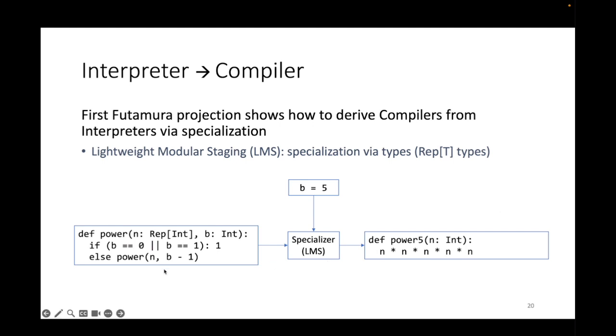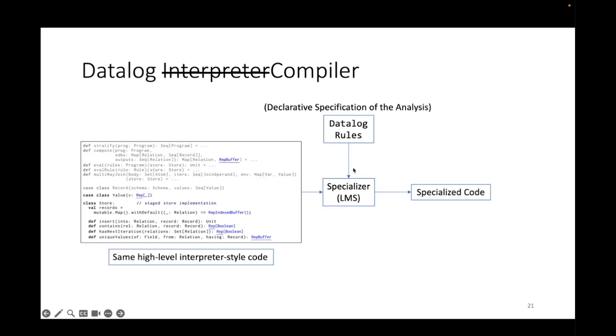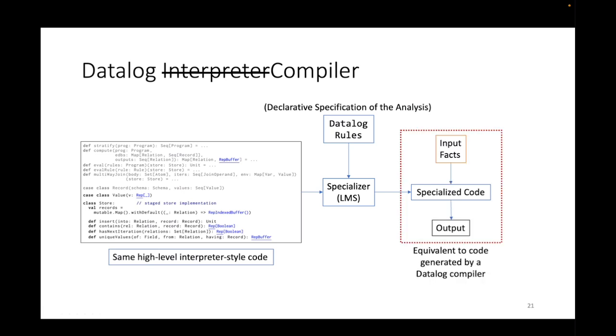As an example, we have this annotated program and let's say we want to specialize this with respect to b equals 5. Then we can use LMS to automatically do this specialization and generate the corresponding specialized function. What does this have to do with Datalog interpreter? We have this interpreter and we make the necessary updates of the types so that this Datalog interpreter can be specialized with respect to a given Datalog program or a given set of Datalog rules. We can do this by changing type annotations, and now we can use our specializer LMS to generate specialized code. This will be equivalent to code generated by a Datalog compiler.